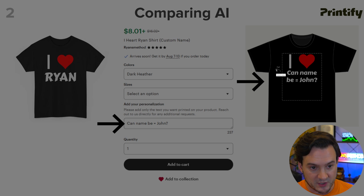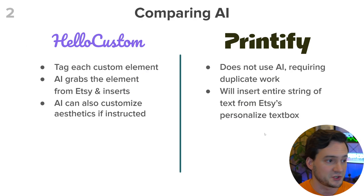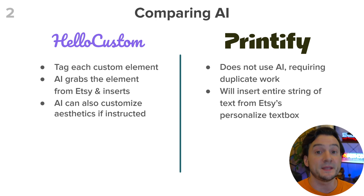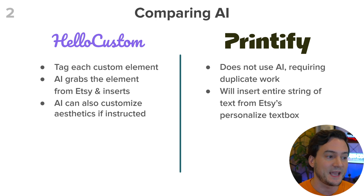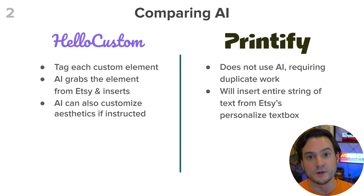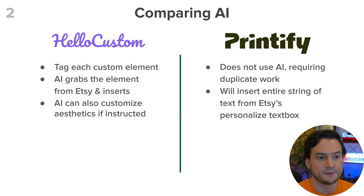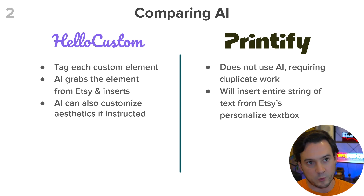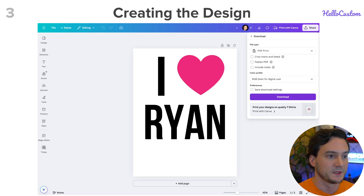With Printify, you have to go in and make sure to change that yourself — you don't want that getting sent to production. To summarize: in Hello Custom, you tag each custom element in your template; AI grabs the element or elements from Etsy based on what the customer provided and inserts it. AI in Hello Custom can also customize aesthetics if instructed, like word or letter coloring. Printify does not use AI, so it can require duplicate work because it inserts the entire string the customer typed into the personalization box.